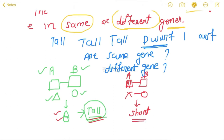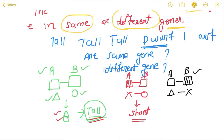Similarly, if gene A is normal but gene B is mutated: gene A is normal so it will produce the triangular protein, but gene B is mutated so it cannot produce the circular protein. So it will again result in a short plant. For the production of a tall plant, you need both the triangular protein and the circular protein.